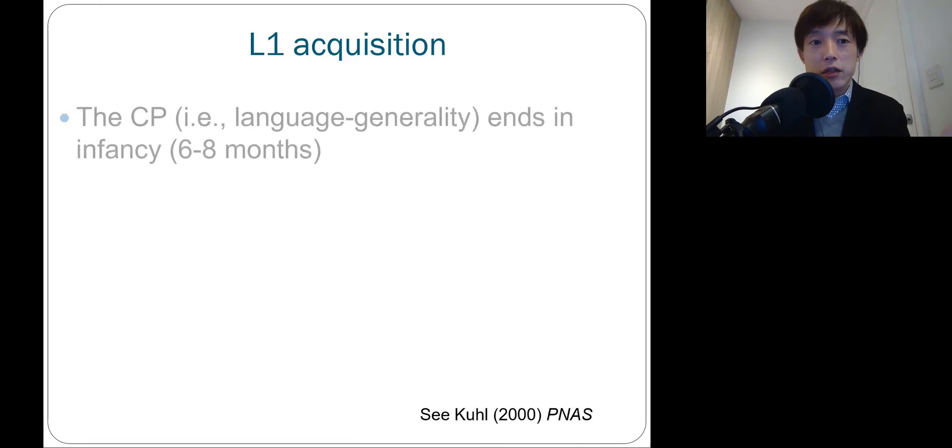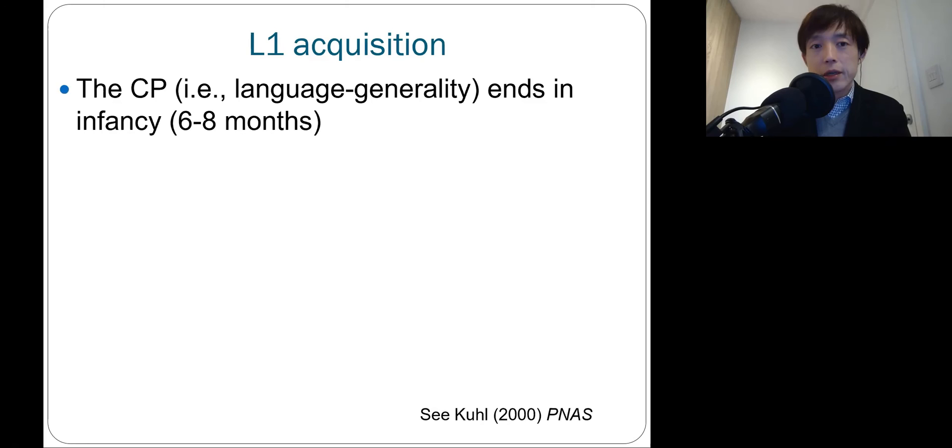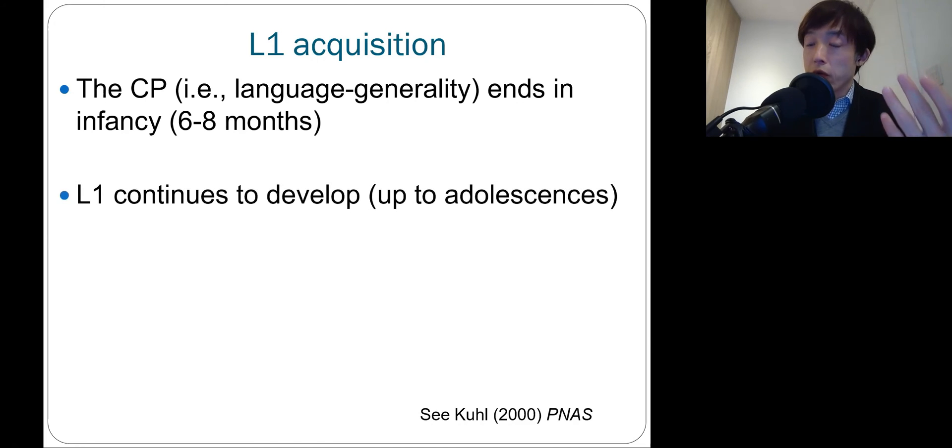So let's move on to the conclusion. First language acquisition, the critical period, basically when you can be a native speaker of any language on this planet, so language generality, this ends in first year infancy. So six to eight months afterwards, your first language acquisition starts. And then this will continue to happen, making the system more generalizable, robust, all the way up to puberty.